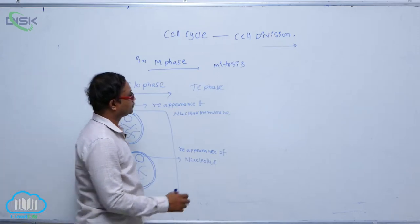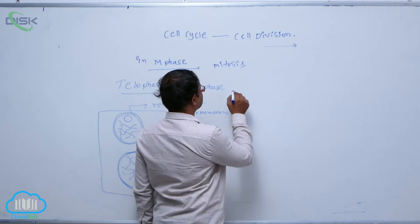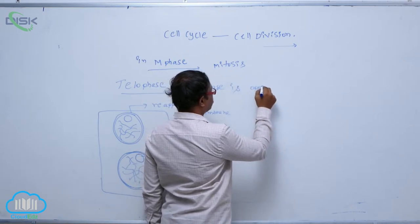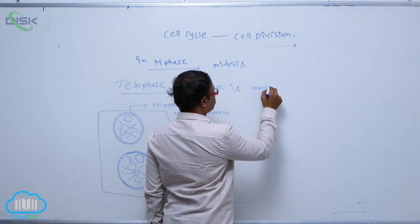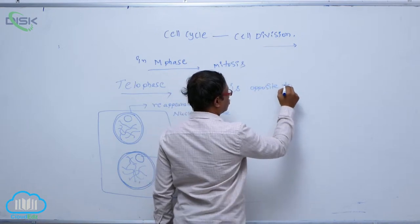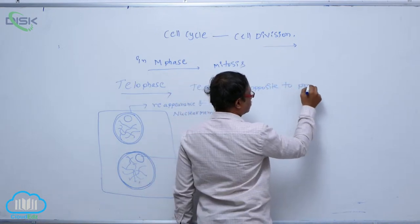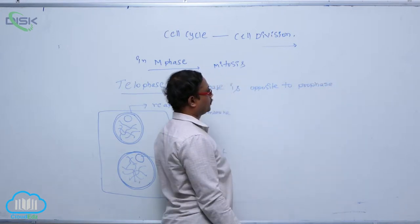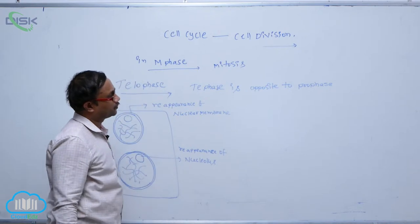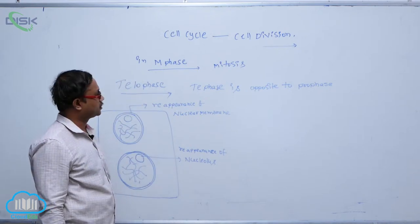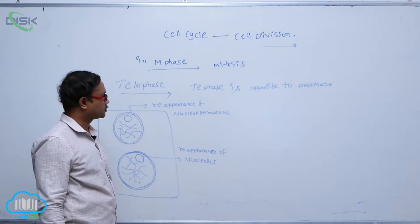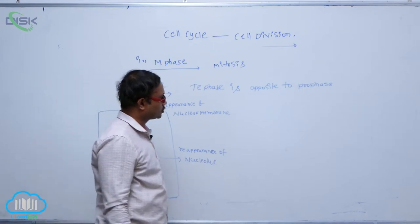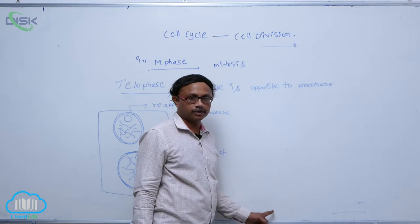Telophase is opposite to prophase. In Telophase, these chromosomes are moved towards the opposite poles.